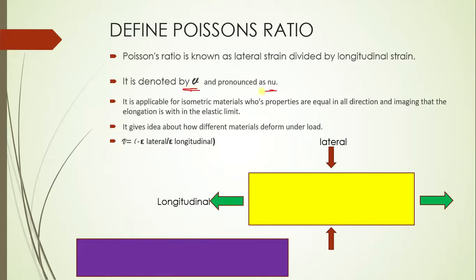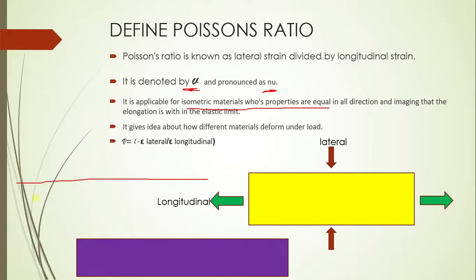Poisson's ratio is applicable within the elastic limit and for isotropic materials — materials having the same properties in all directions with uniform elongation. Studying Poisson's ratio gives us an idea of how a member or rock is going to deform under the applied load.